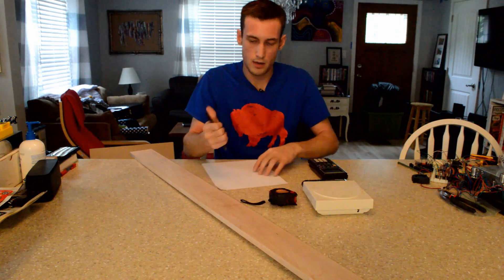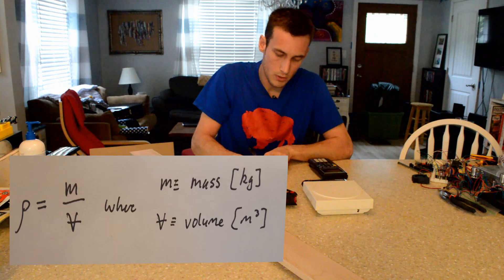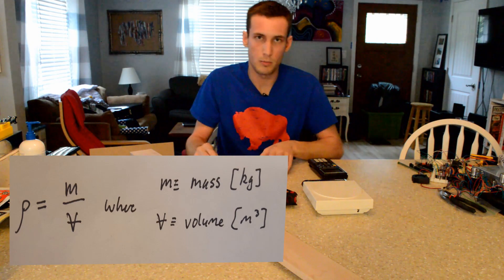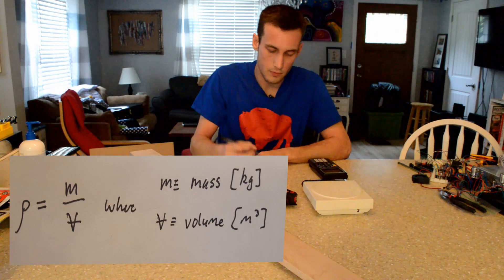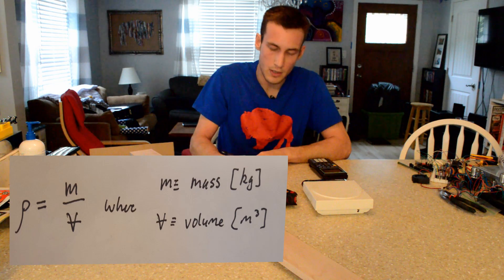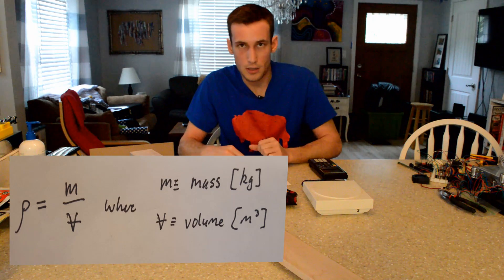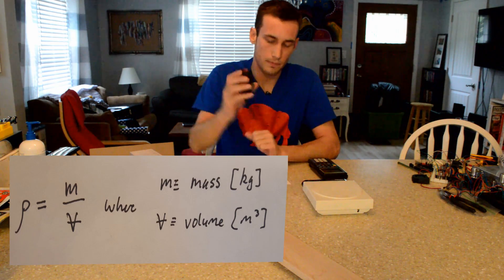And so we're trying to find the density, rho (ρ), which is equal to the mass over the volume. I'll post these up on the screen too. And so first we need to find what the volume is, and we want this actually in meters cubed, but first we're going to find it in inches.